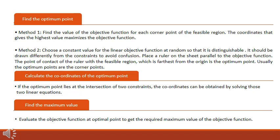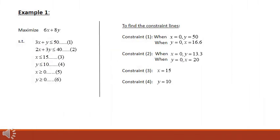Let us now look at an example. We have to maximize 6x plus 8y subject to 6 constraints: 4 inequality constraints and 2 non-negativity constraints. First, we find the constraint lines by making them equalities and finding the intercepts. For the first constraint, when x equals 0, y equals 50, and when y equals 0, x equals 16.6. So the straight line joins y equal to 50 and x equal to 16.6.